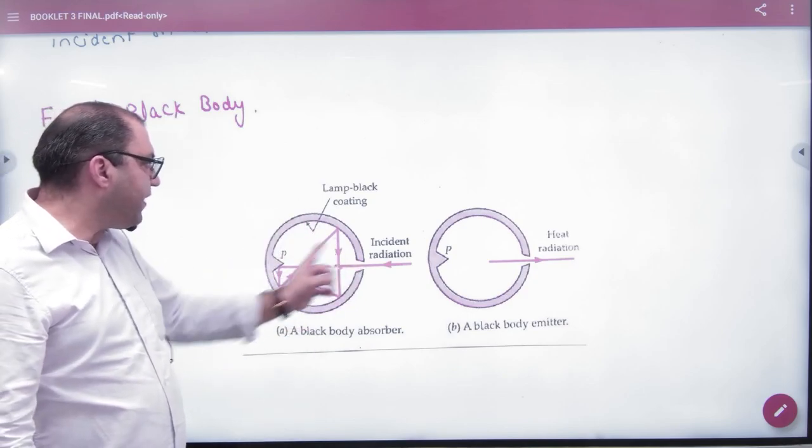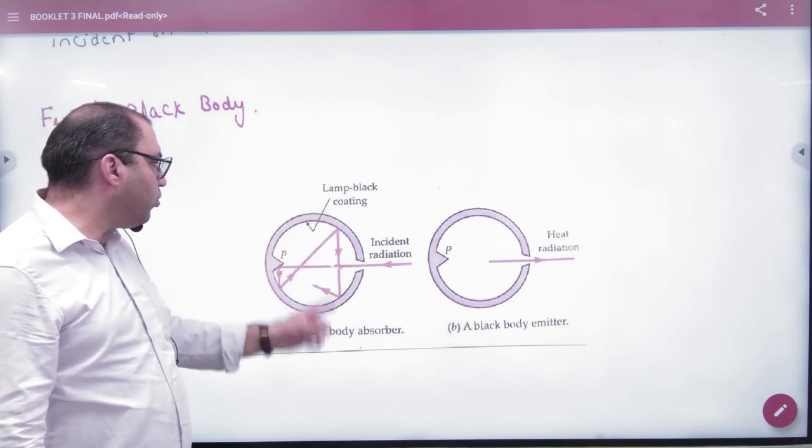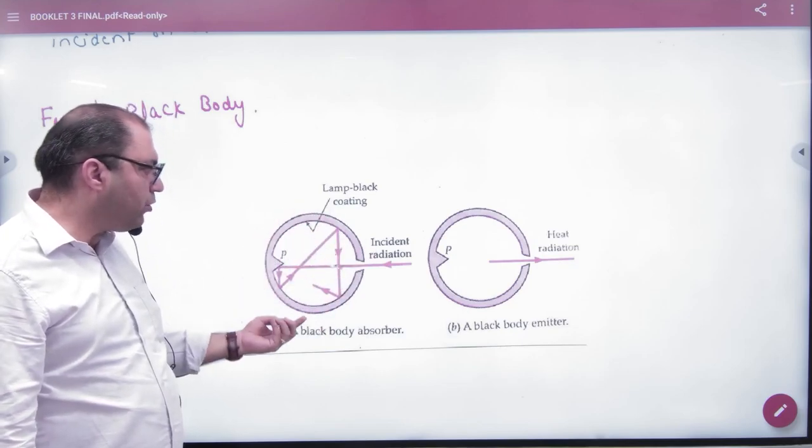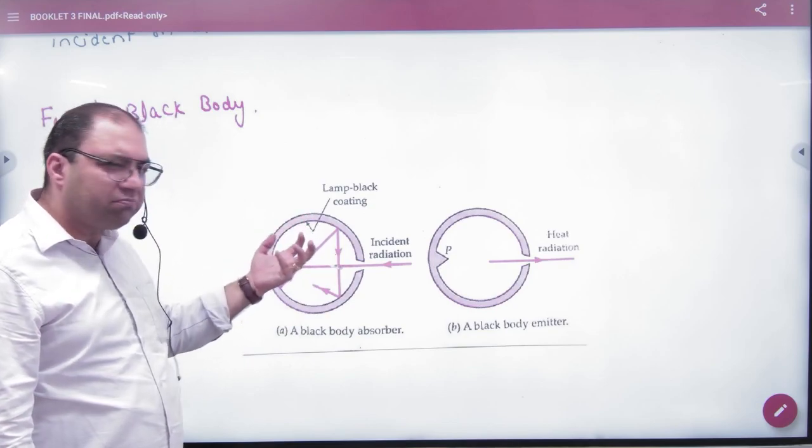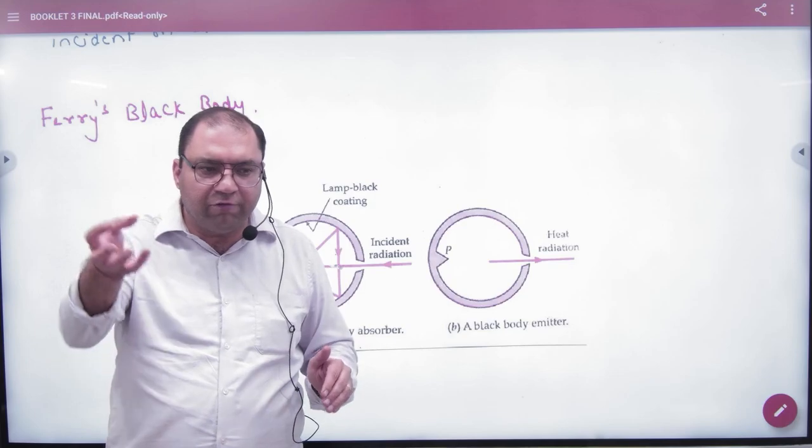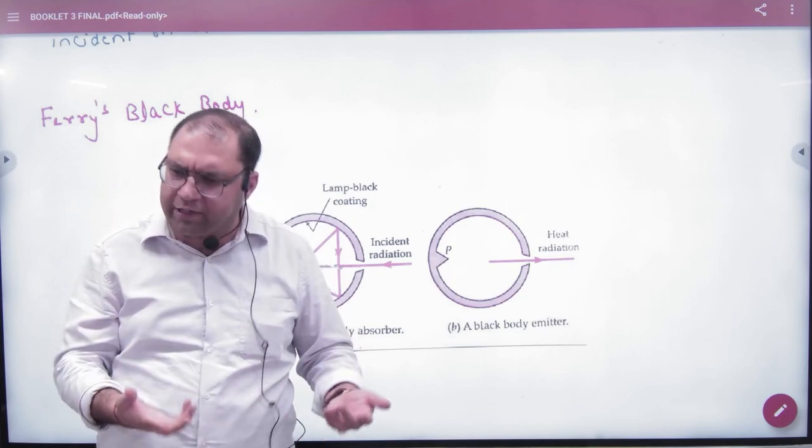It reflects and reflects repeatedly. It has a lamp black coating that absorbs the energy. Sometimes it is given a mirror, sometimes it has black coating. What does it do? It absorbs and reflects repeatedly.